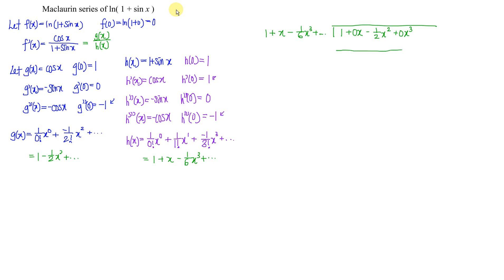Let's perform the long division. When we apply long division, the leading term always cancels when we subtract. So in order to get 0, we need 1 minus 1, meaning we put 1 in the quotient. So 1 times 1 gives 1, and 1 minus 1 gives 0. Continuing: 1 times x gives x, and 1 times negative (1/6)x cubed gives negative (1/6)x cubed. Subtracting: 0 minus negative x gives negative x, and 0 minus negative (1/6)x cubed gives plus (1/6)x cubed.